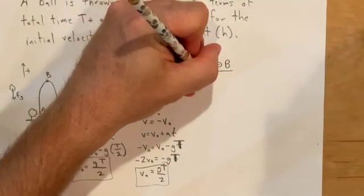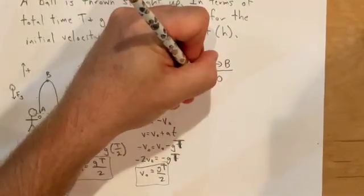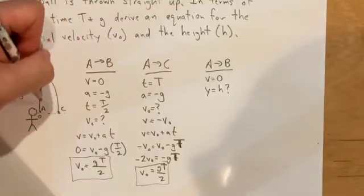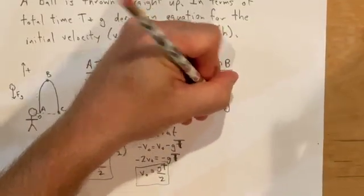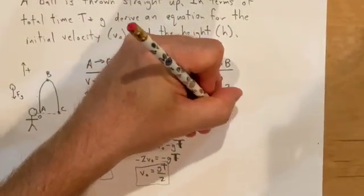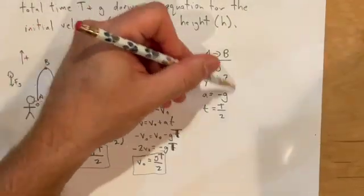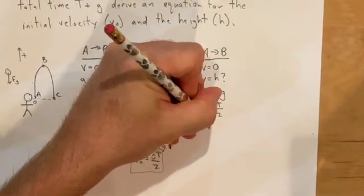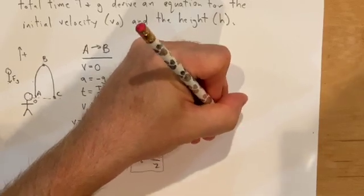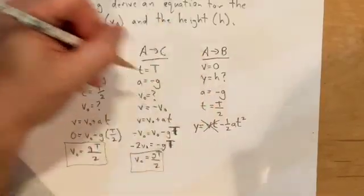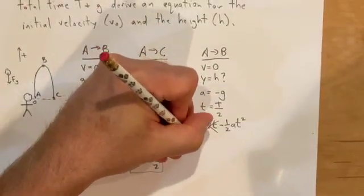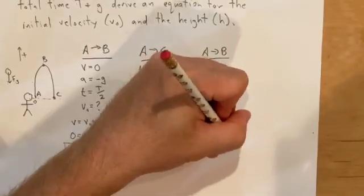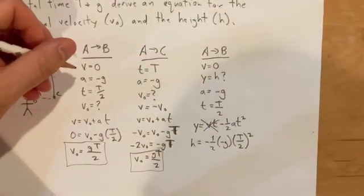Now let's try it. I'm going from A to B, so I know my final velocity is 0, I'm looking for h, a is negative g, and my time is T over 2. What equation am I going to use? I would use y equals vt minus 1/2 at². This goes away and you end up with h equals negative 1/2 times negative g times the quantity T over 2 squared.